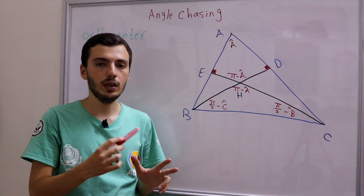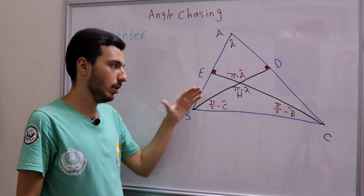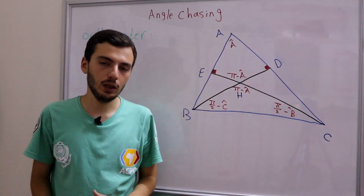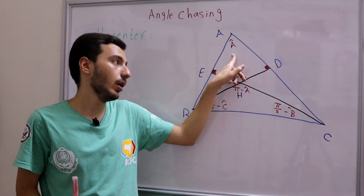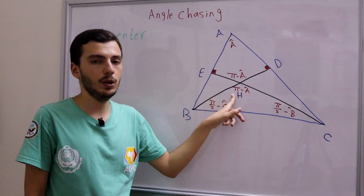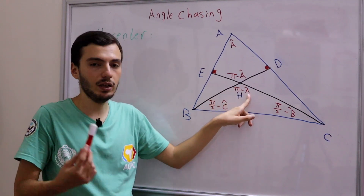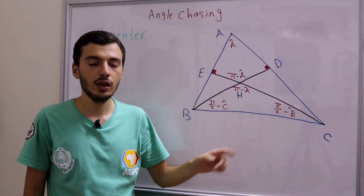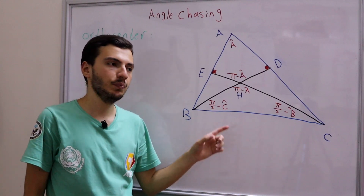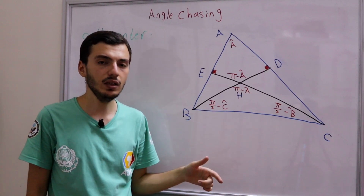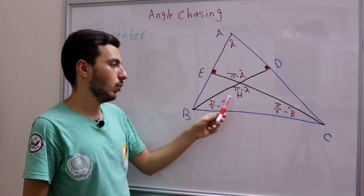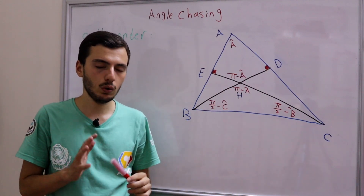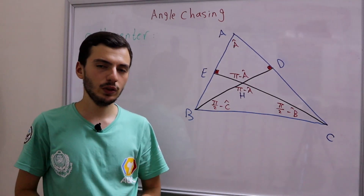You need to memorize these results for the orthocenter. Notice that for all three triangle centers, the angle at the center between B and C can always be evaluated just by knowing the value of A. For example, if angle A is 30 degrees: for the orthocenter it's 180 minus 30 = 150°; for the circumcenter it's 2 × 30 = 60°; and for the incenter it's 90 + half of 30 = 105°.